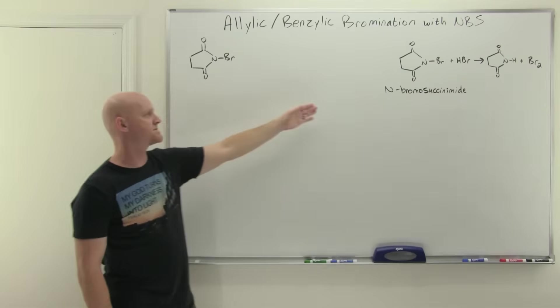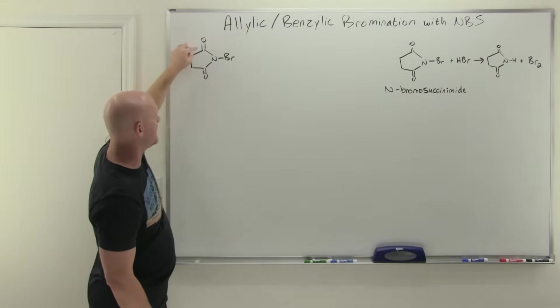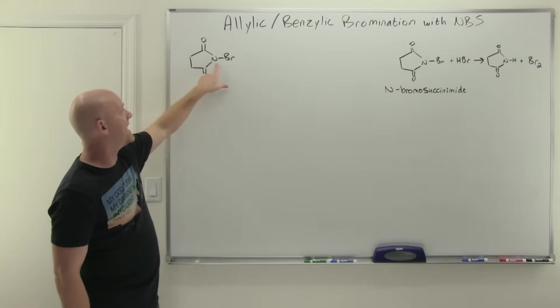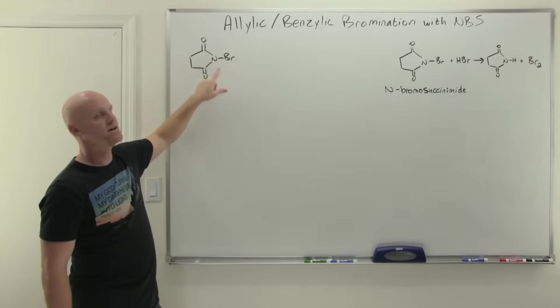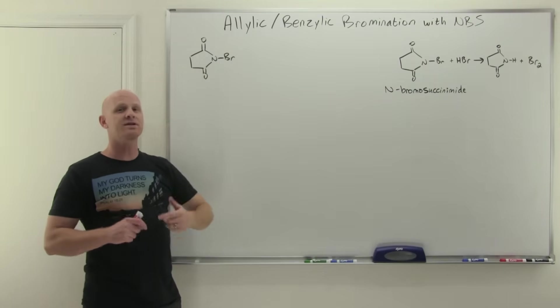So this is N-bromo succinimide. I've spelled it out over here. And this part of it is this succinimide. It's an imide, it turns out, similar to an amide, but with a couple of carbonyls here. And the N-bromo part refers to the fact that the bromine is attached to the nitrogen. And it is that bond that we're going to break and use it to form radicals in a little bit to get this party started.